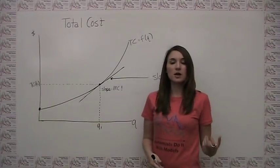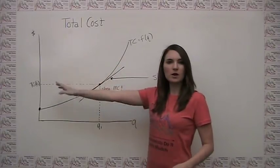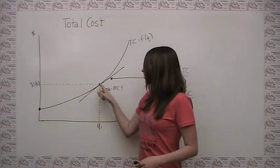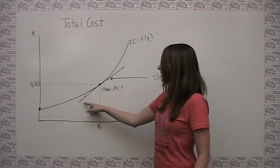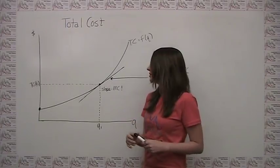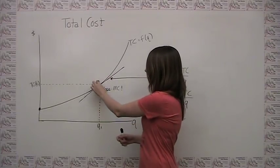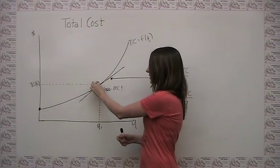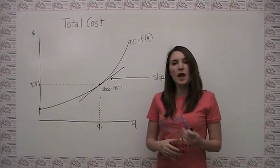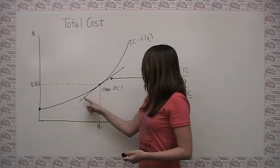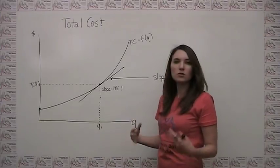We can also calculate marginal cost by looking at the total cost curve. Here, rather than drawing a line from the origin to our point in question, I instead drew a line that's tangent to our cost curve at the point quantity Q1. Drawing a tangent line means it intersects the curve at exactly that one point, just touching it. As it turns out, the slope of this tangent line is equal to the marginal cost of producing at Q1.